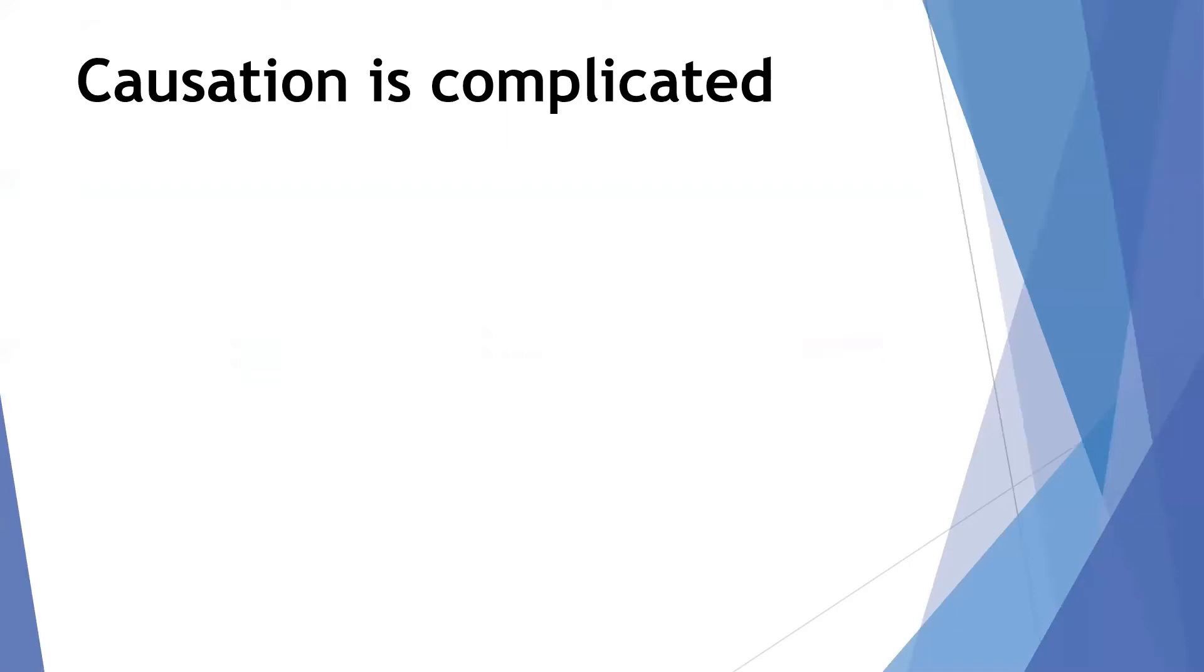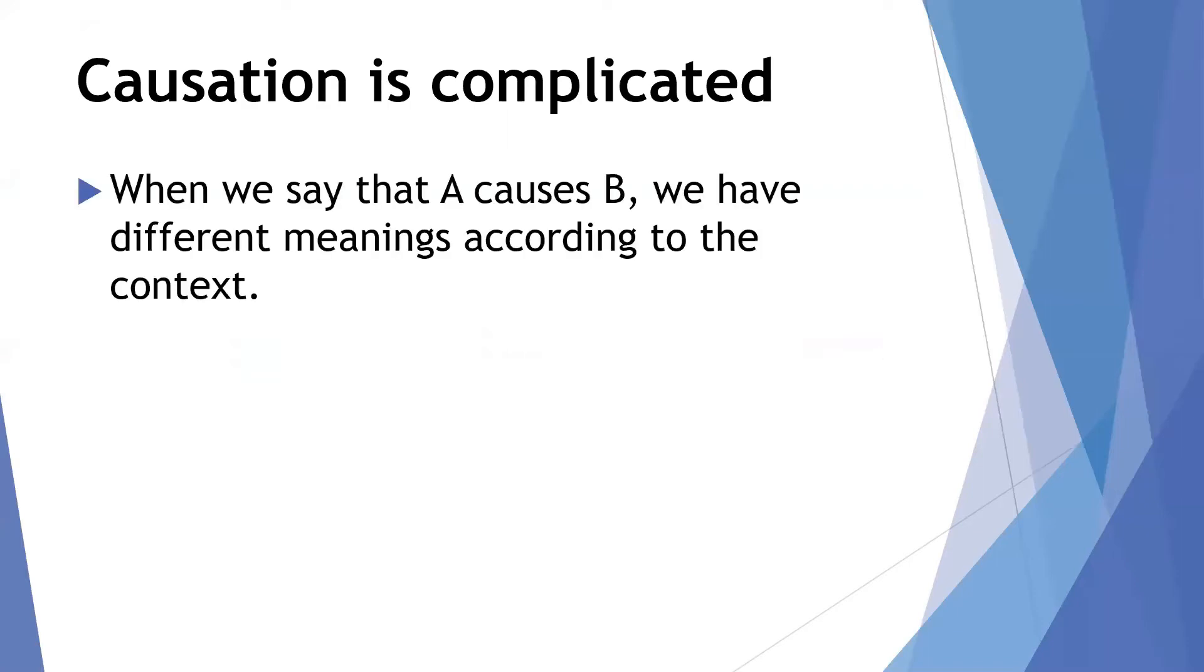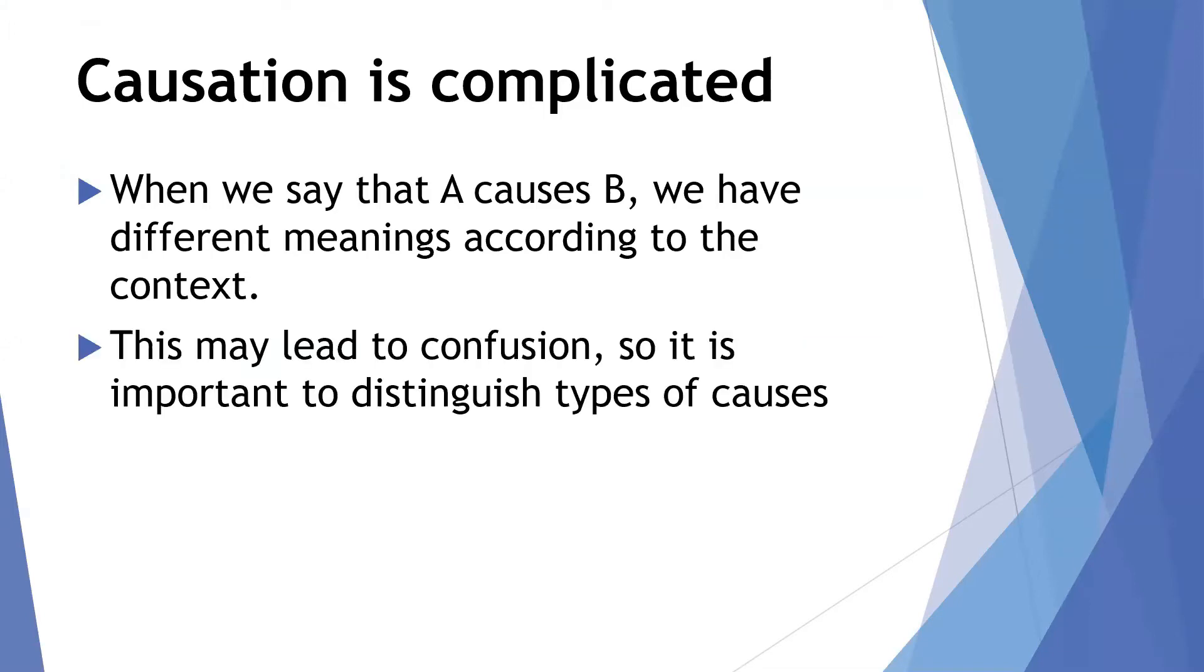Causation can be very complicated. So when we say that A causes B, we have different meanings according to the context, and we need to figure that out. We need to sort out what type of causation we're talking about. Because of the variety of meanings that are possible when we're talking about causation, it's really important to distinguish the types of causes. So in this video, we're looking at a variety of types of causes.